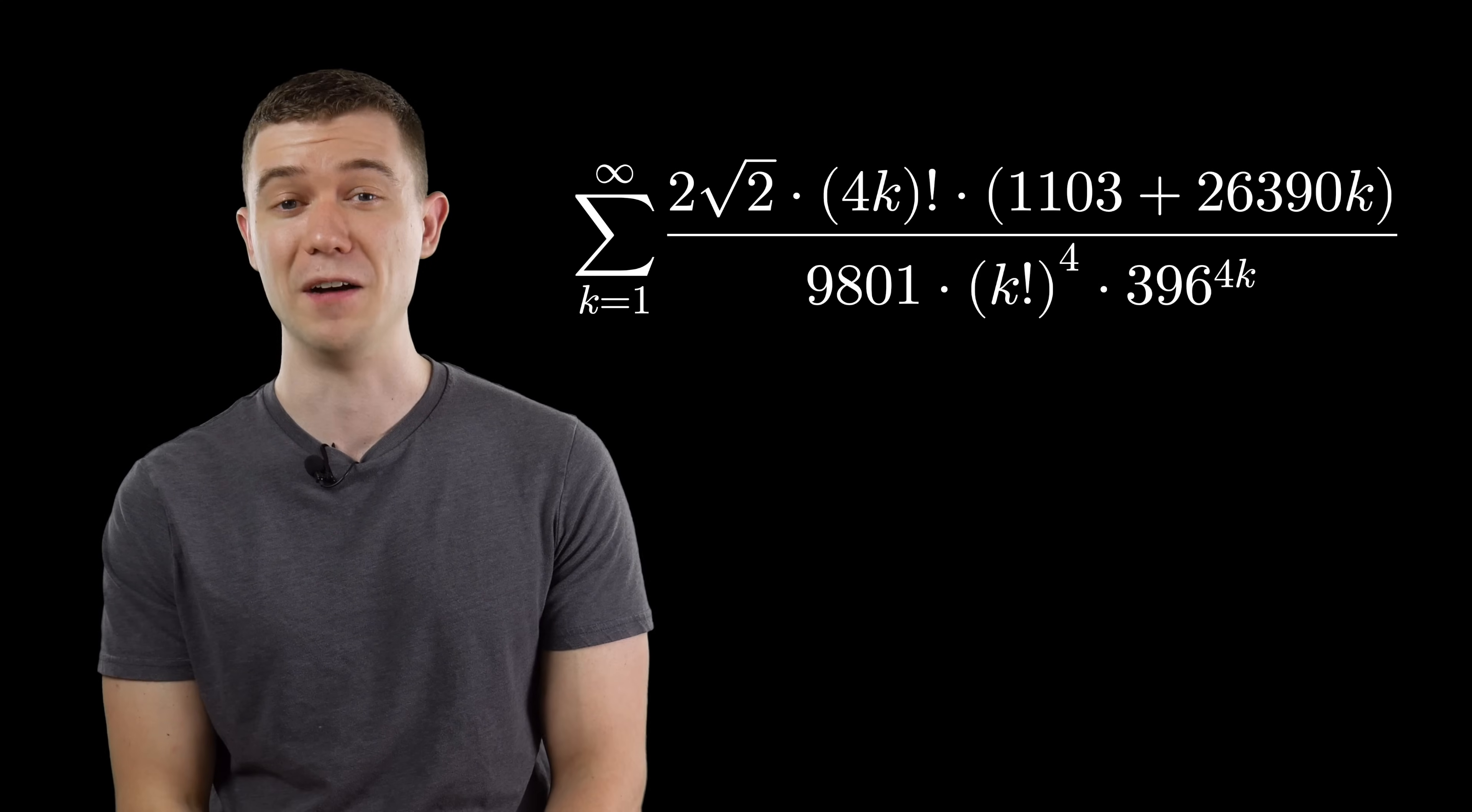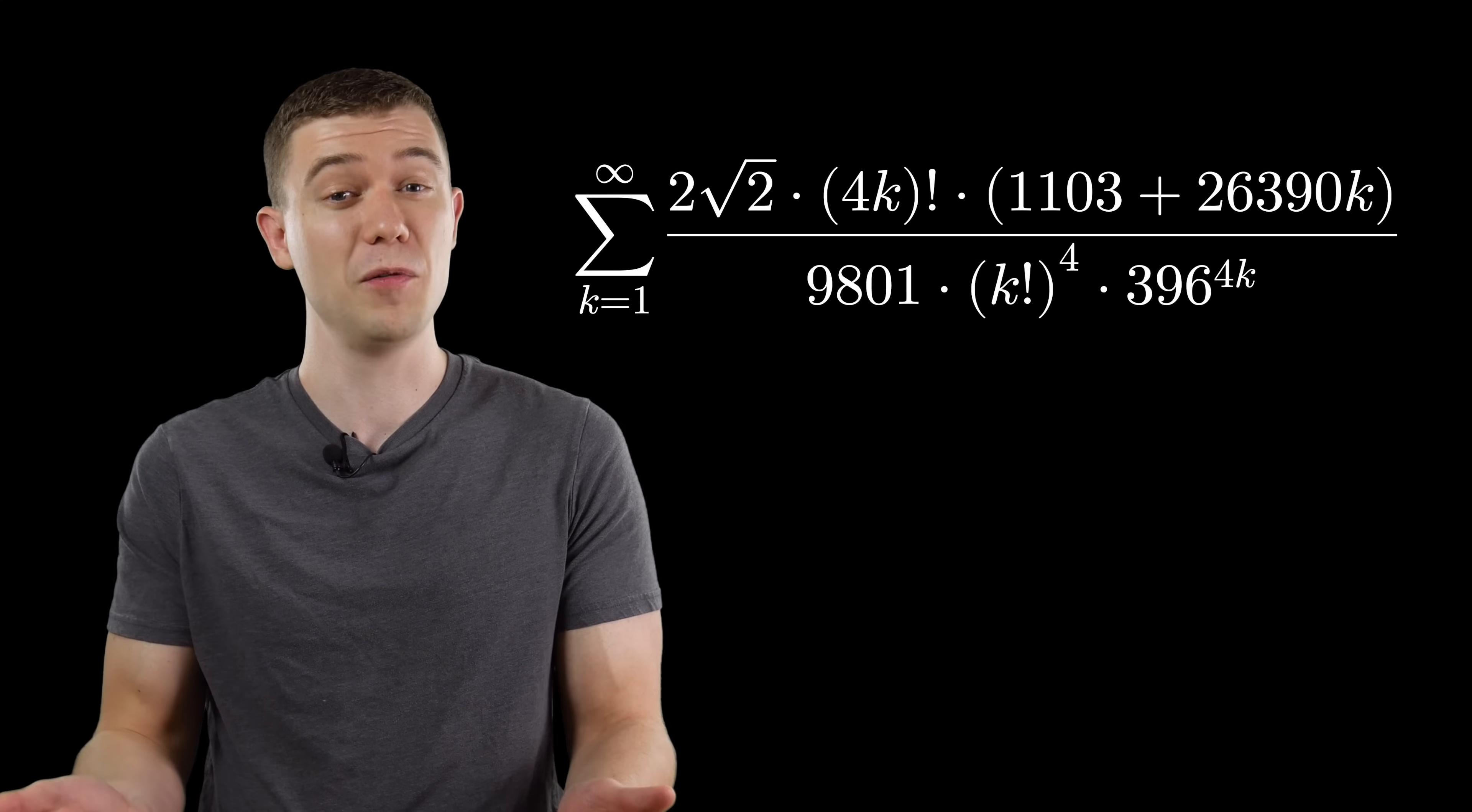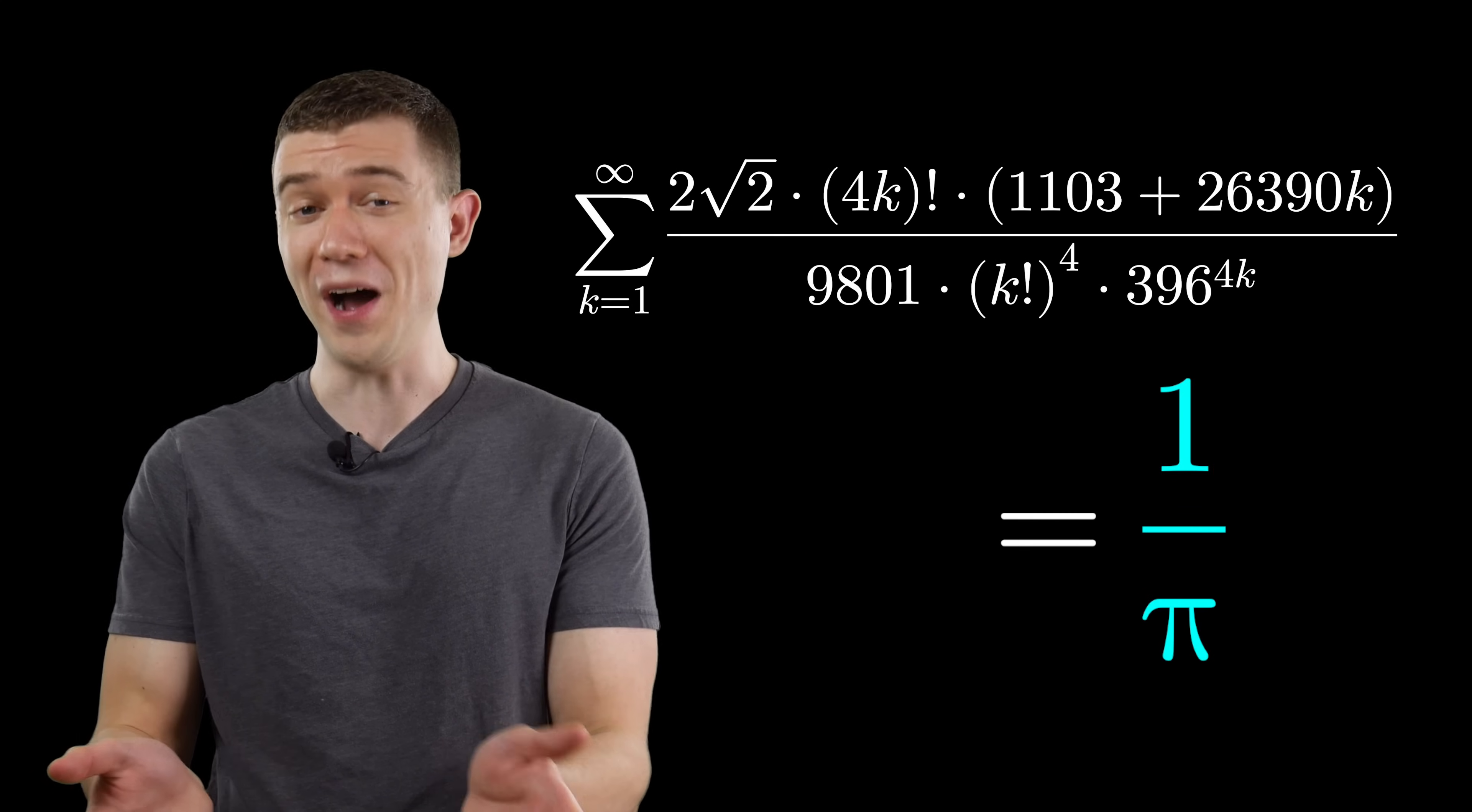Last but not least, the most incredible equation that you may have never seen is one from the great Ramanujan. Leave it to the great Ramanujan to calculate this infinite sum, which of course evaluates to 1 over pi.